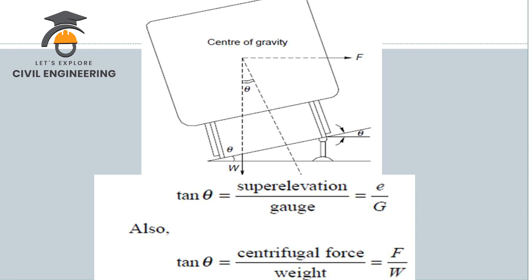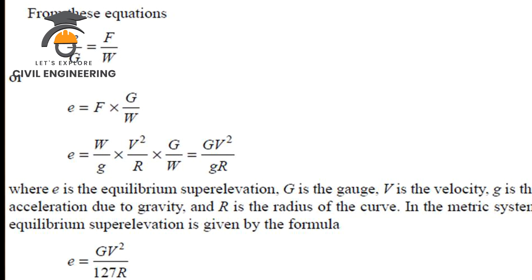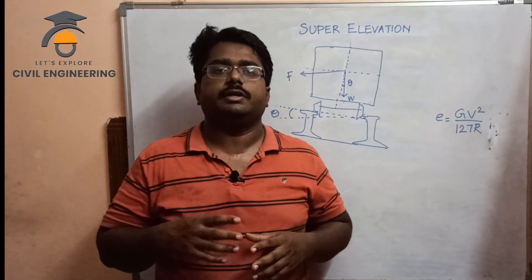The equilibrium condition gives tan θ equal to E by G, and F by W. Comparing the equilibrium super elevation value, the dimension gives E equal to GV² divided by 127 times R. So the formula for super elevation is E = GV² / (127R).